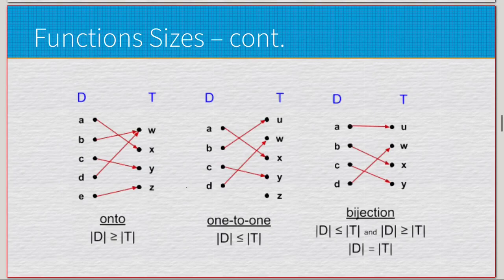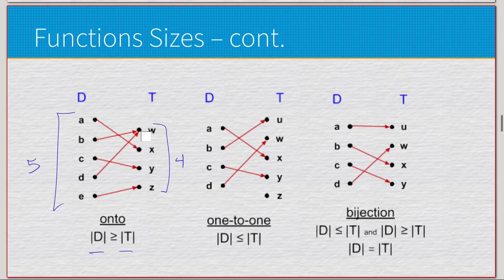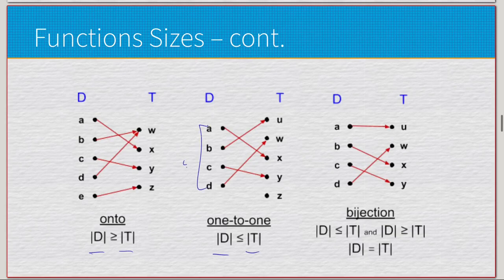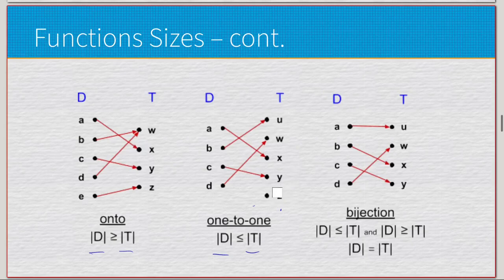For example: an onto function where the domain has cardinality 5 and the target has cardinality 4 — everything in the target is mapped to, though not uniquely, and the range equals the target. Conversely, a one-to-one function with domain 4 and target 5 has everything mapped uniquely, but one target element is not mapped. In a bijection with 4 and 4, all elements are mapped uniquely — that's the bijection.